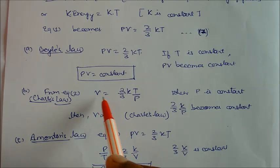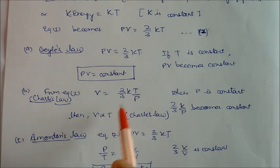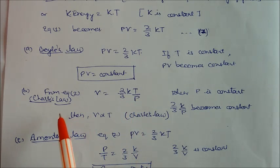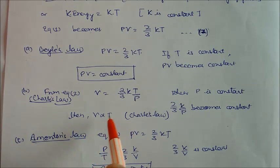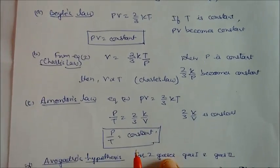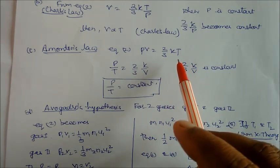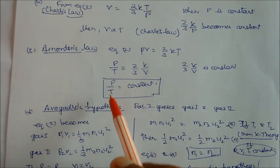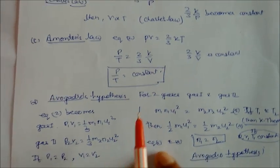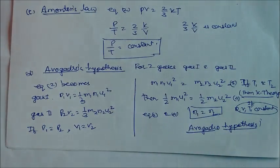Rearranging pV = (2/3)KT gives V = (2/3)(KT/p). In Charles' Law, pressure is kept constant, so everything on the right except T is constant, meaning V is proportional to T — Charles' Law is derived. For Amontons' Law, holding volume and moles constant gives p/T = constant, which is also derived from the same kinetic equation.